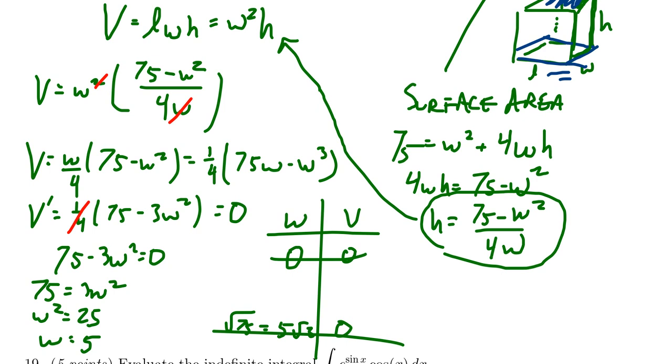So it seems like the candidate for optimization is going to happen here at 5. Five of course is the width, so if we put it into our function we're going to end up with one fourth times 5 times 75 minus 25, which is 5 squared.